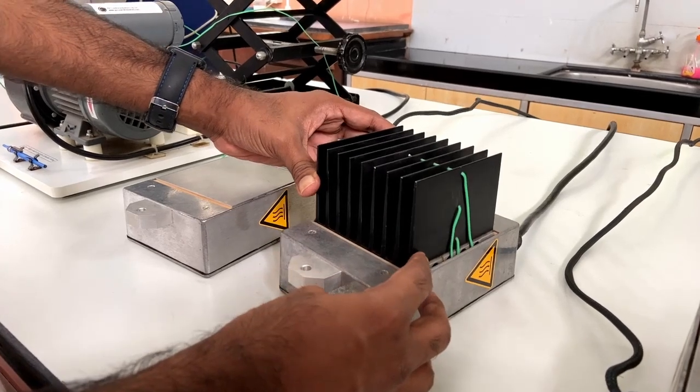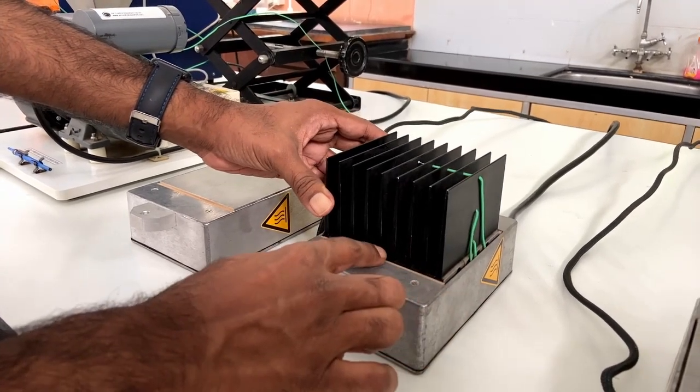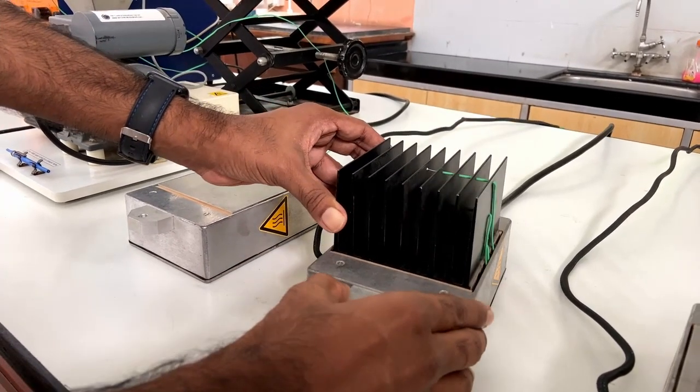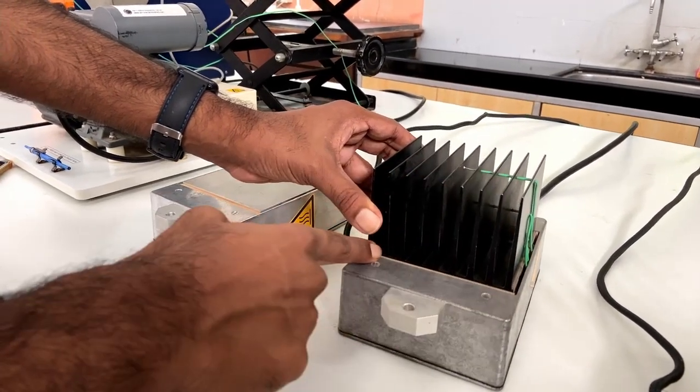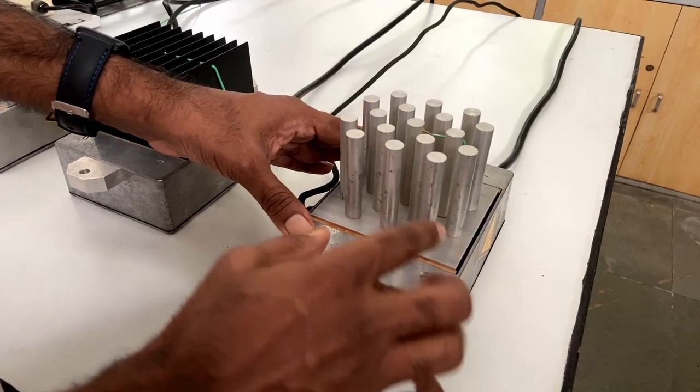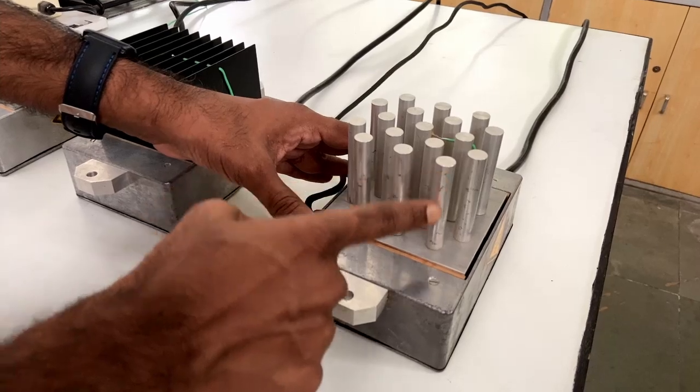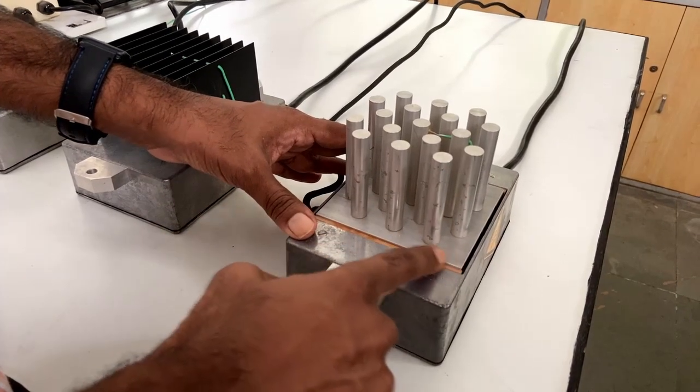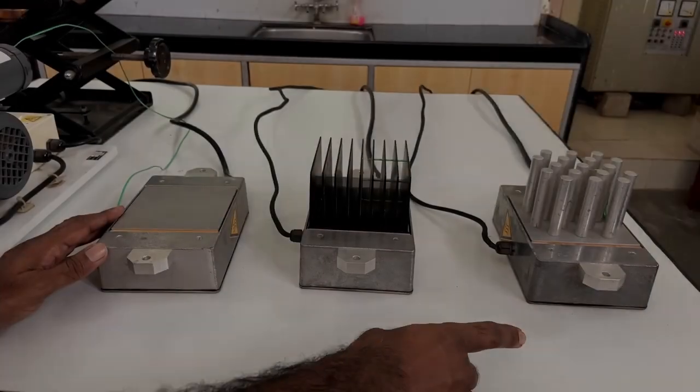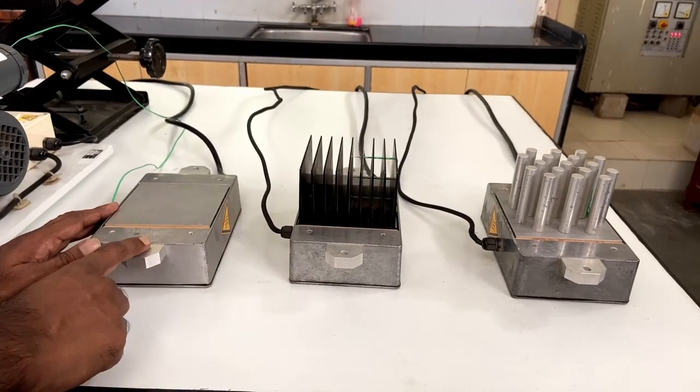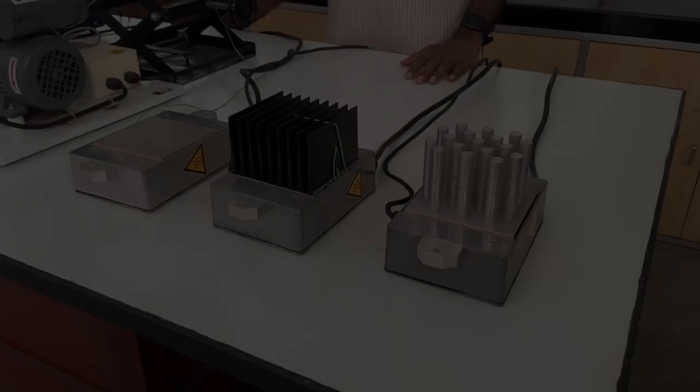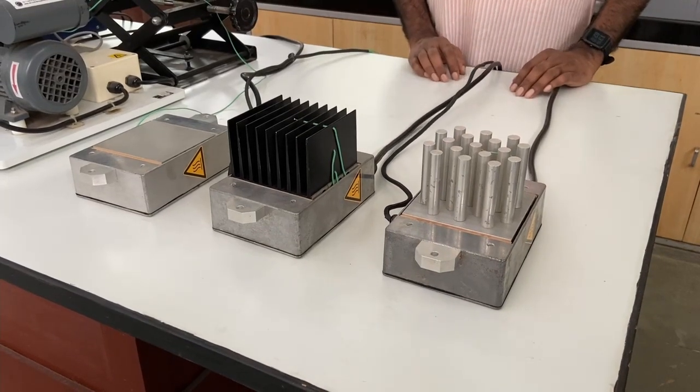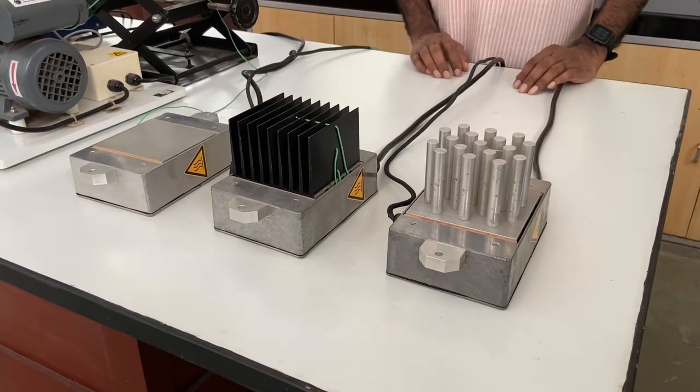Here we have flat fins with a triangular cross section coming out of this surface. In this piece we have cylindrical pins extended from the heated base. You will be using one or more of these pieces to study convective heat transfer. Come let's find out how we can set up a simple experiment to quantify all these.